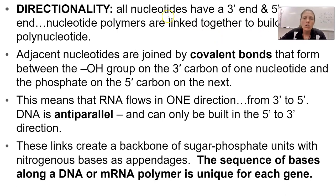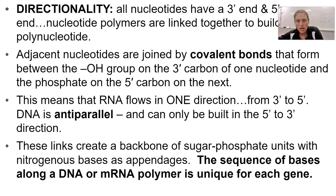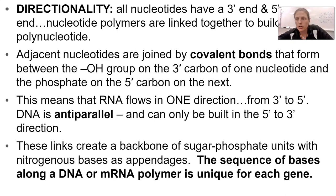Like with all of our macromolecules, we like to zone in on directionality. All nucleotides have a three prime end and a five prime end. The nucleotide polymers are linked together and build a polynucleotide, which is basically just a DNA or RNA molecule. Adjacent nucleotides are joined by covalent bonds that form between the OH groups on the three prime carbon of one nucleotide and the phosphate on the five prime end. RNA flows in one direction - three to five - because it's a single strand. However, DNA runs opposite strands to each other; we call this antiparallel.